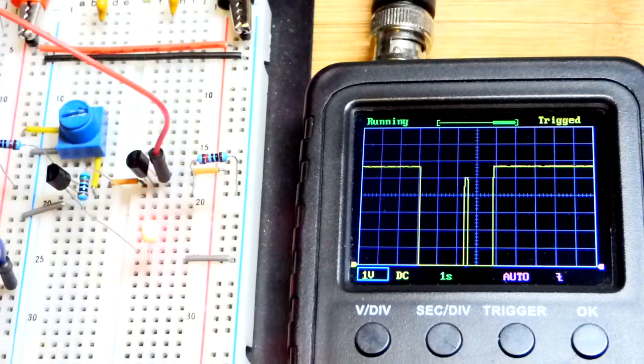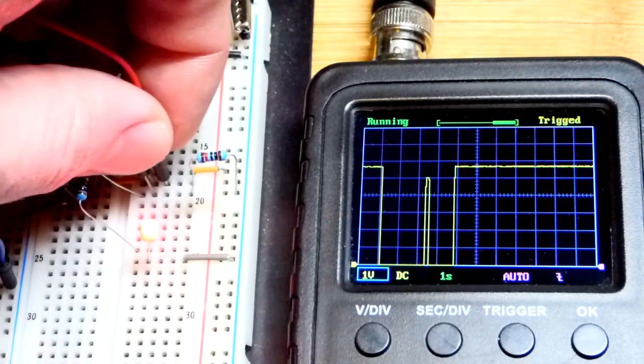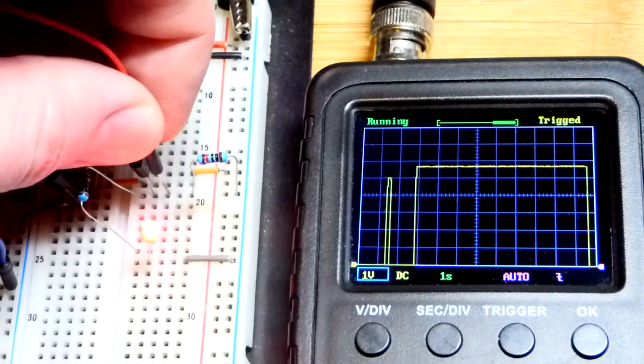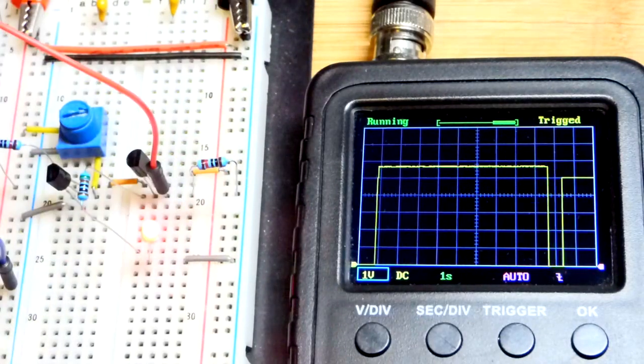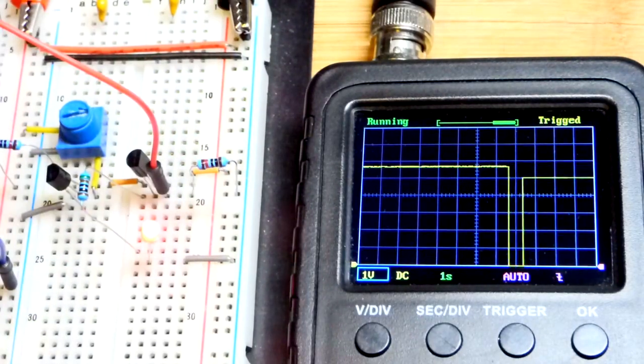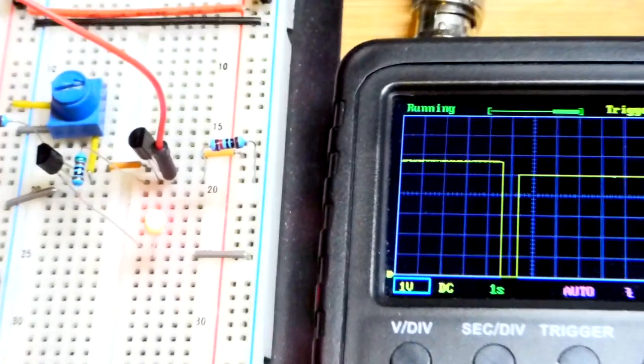Now, if I move it down to the emitter there, where the load is, there you can see we're back to 5 volts. That 5 volts that we had with the trim pot.